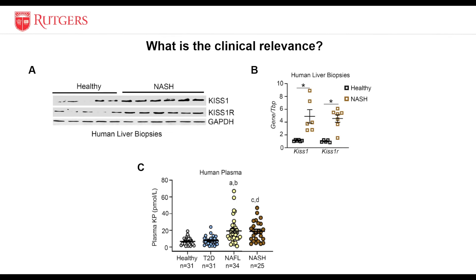Finally, we wanted to determine the clinical relevance of these findings in NAFLD. KIS1 and KIS1R expression was examined in human liver biopsies from the NASH PACE cohort. There was a significant increase in KIS1 and KIS1R protein and mRNA levels in human NASH liver samples compared to healthy subjects. We also measured plasma kispeptin levels in NAFLD patients and found a significant increase in male patients with NASH and NAFLD compared to healthy patients or those with type 2 diabetes. This suggests that the increase in KIS1, KIS1R, and plasma kispeptins may serve as a compensatory response aiming to slow down or resolve the progression of NAFLD.